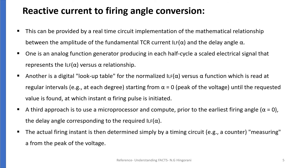Next is reactive current to firing angle conversion. This is provided by real-time circuit implementation of the mathematical relationship between the amplitude of the fundamental TCR current ILF of alpha and the delay angle. We have already studied this mathematical relationship while studying the TCR — that is, the fundamental current equation which is an alpha-dependent quantity. The first approach is an analog function generator producing in each half cycle a scaled electrical signal that represents the ILF of alpha versus alpha relationship.